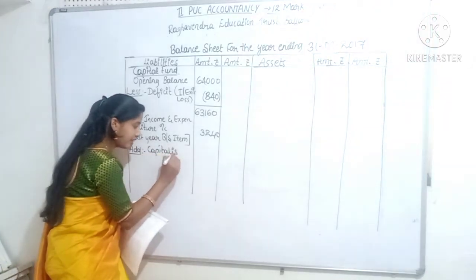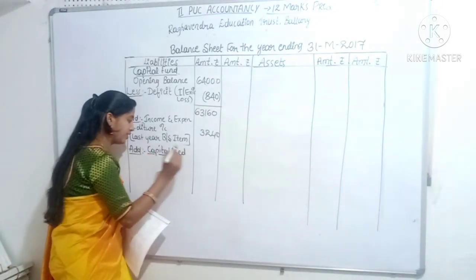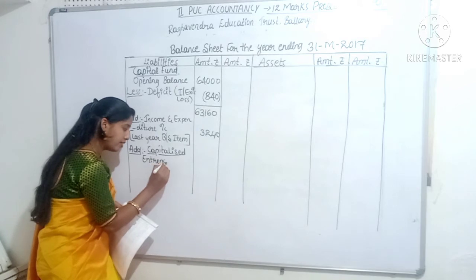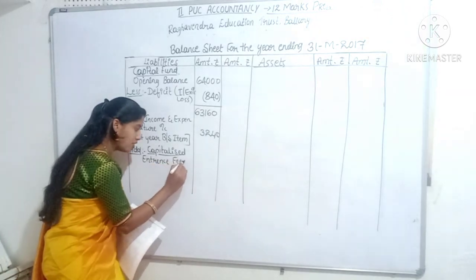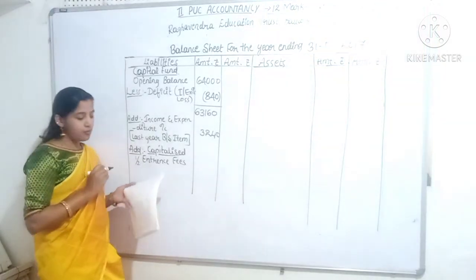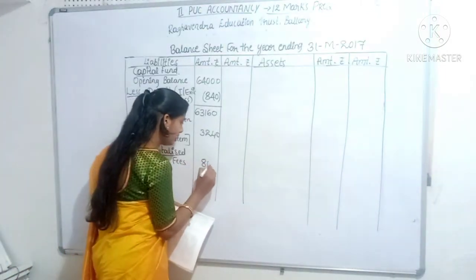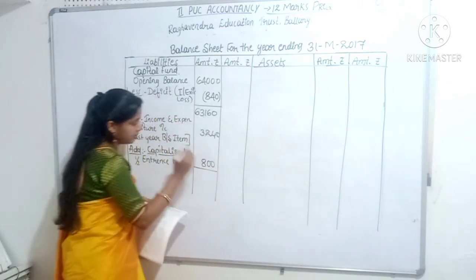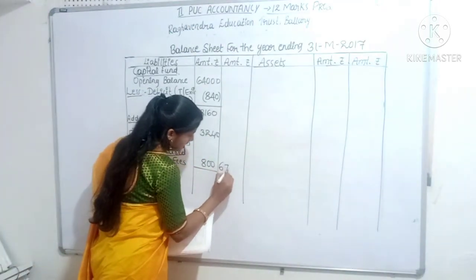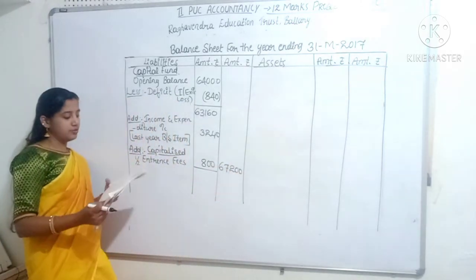Also add the capitalized item: entrance fee - half of the entrance fee, the remaining portion not treated as revenue. Capitalized entrance fee amount Rs. 800. Adding these three items, total capital fund amount is Rs. 67,200.